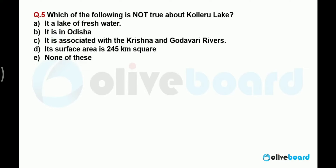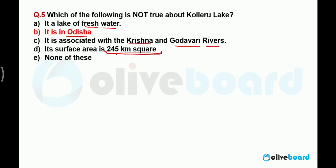Which of the following is not true about Kolleru Lake? Kolleru Lake is not in Odisha — it is located in Andhra Pradesh. It is a fresh water lake associated with the Krishna and Godavari rivers. Its surface area is approximately 245 square kilometers.